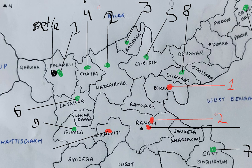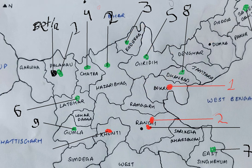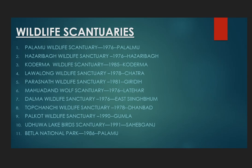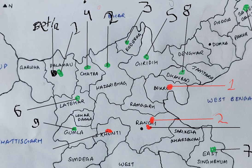The area of the Hazaribag National Park is 186.2 square kilometers. Next is Koderma Wildlife Sanctuary, established in 1985 in Koderma district, with an area of 150 square kilometers.